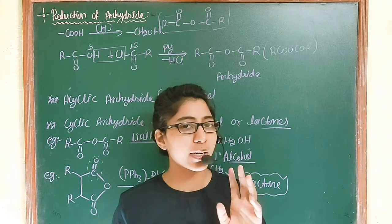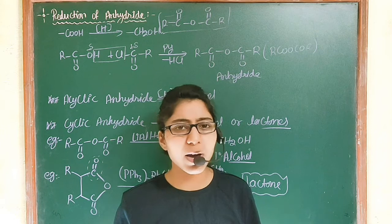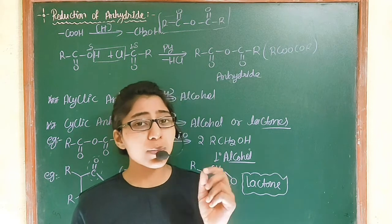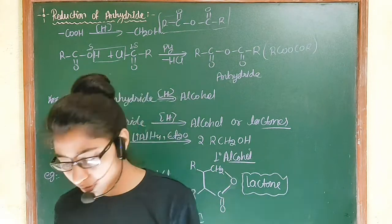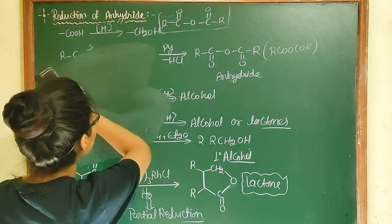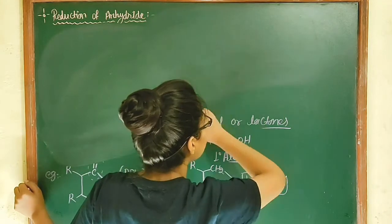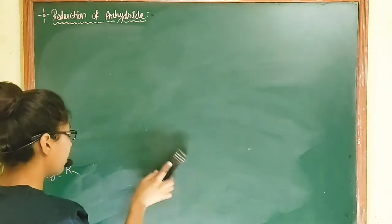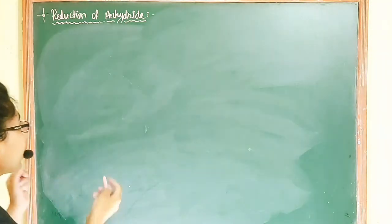But if you use LiAlH4 instead of Wilkinson catalyst for the cyclic anhydride, LiAlH4 gives diols on the reduction of cyclic anhydrides. So the product of cyclic anhydride with LiAlH4 is diols — this is a complete reduction giving a diol.